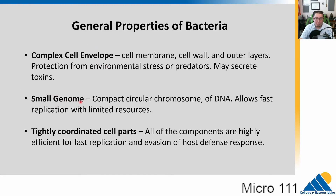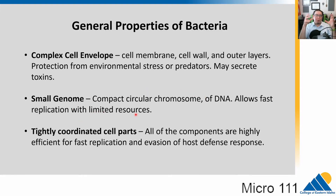Bacteria pretty much always have a small genome compared to eukaryotes. In general, bacterial genomes are very small — super compact circular chromosomes of DNA. This allows fast replication with limited resources. They have a very small number of genes and very little non-coding DNA — sometimes called junk DNA. We have a lot of extra DNA in our cells that slows down our replication time, but bacteria are all about being streamlined and quick, reproducing really fast.